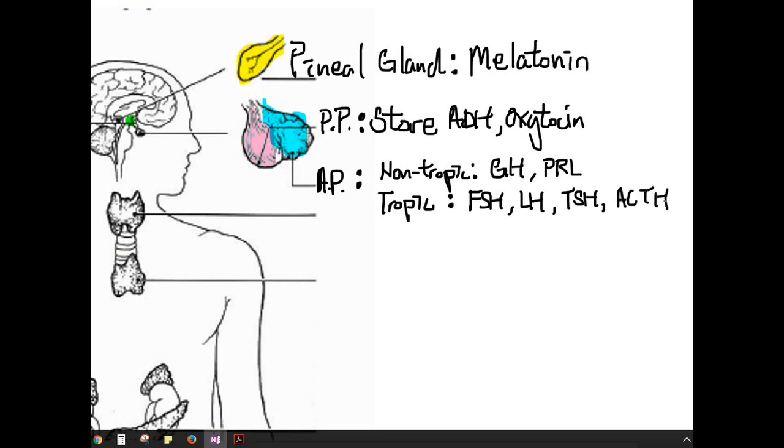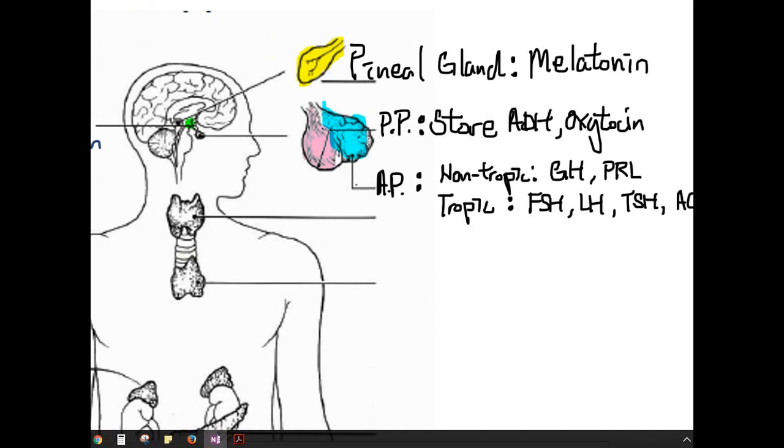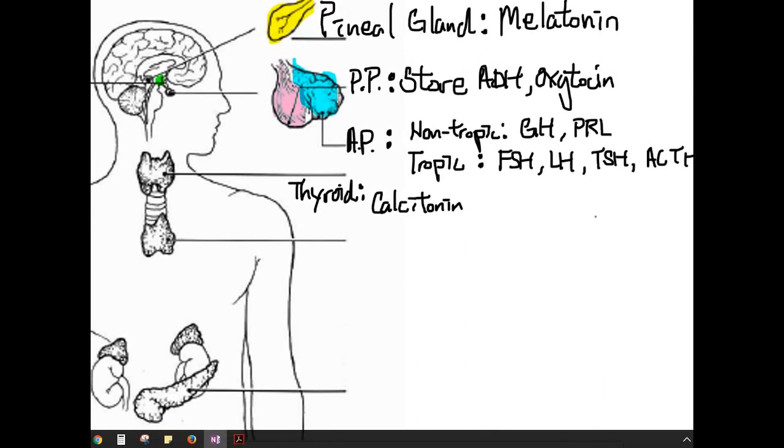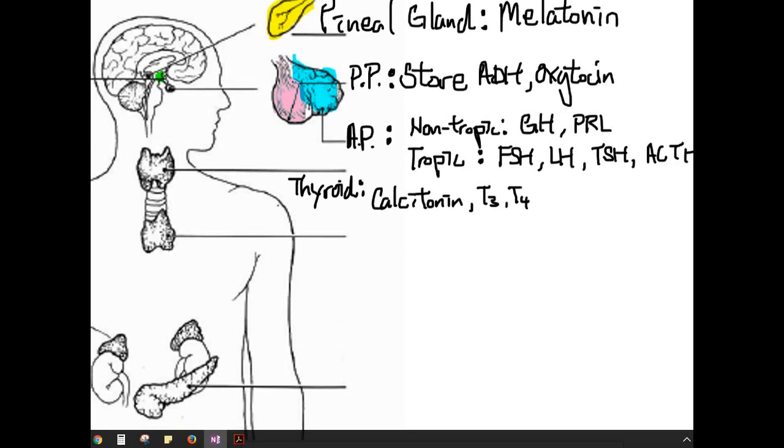Moving down, we have the thyroid here. The thyroid gland secretes three hormones. We have calcitonin, which helps you bring calcium level back down in the blood when it's too high. We have T3, T4, which are responsible for increasing your metabolism. At the back of the thyroid, so this is the thyroid.